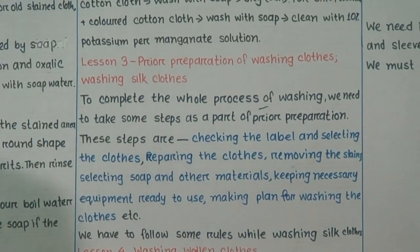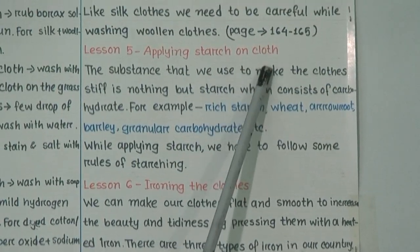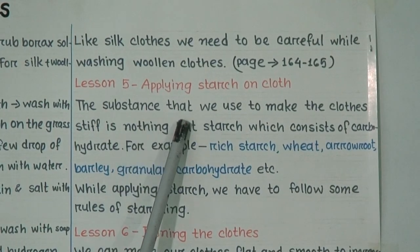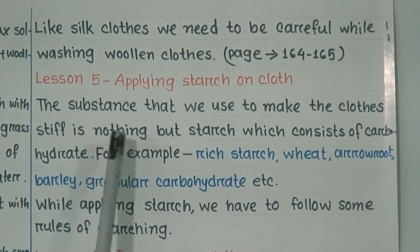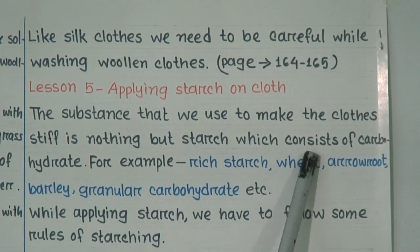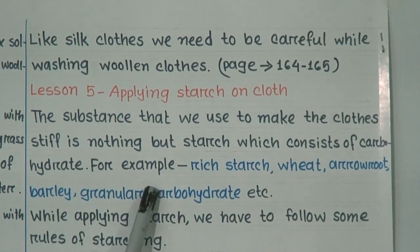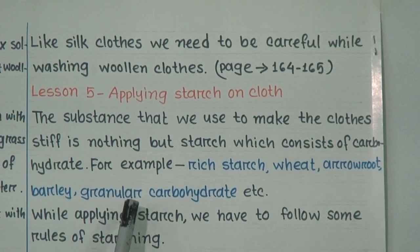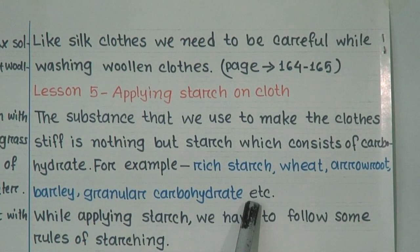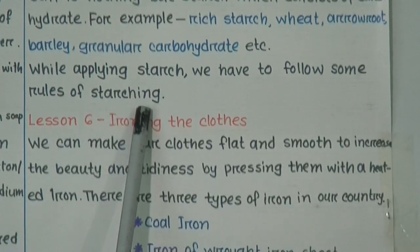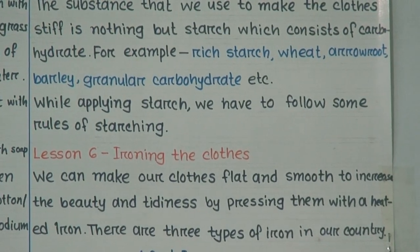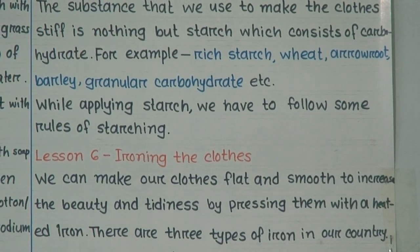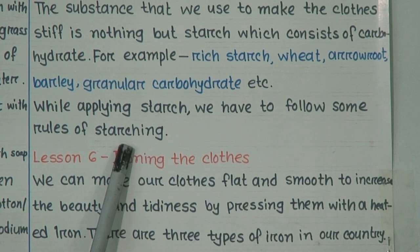Lesson 5: Applying starch on cloth. The substance used to make cloths stiff is starch, which consists of carbohydrate. Examples include rice starch, wheat, arrowroot, and blended carbohydrates. While applying starch, we have to follow some rules of starching. We can use starch on our cloths but must follow the proper rules while applying it.